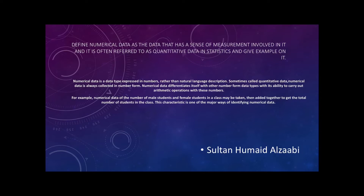For example, the numerical data of the number of male students and female students in a class may be taken then added together to get the total number of students in the class. This characteristic — the ability to perform arithmetic — is one of the major ways of identifying numerical data.